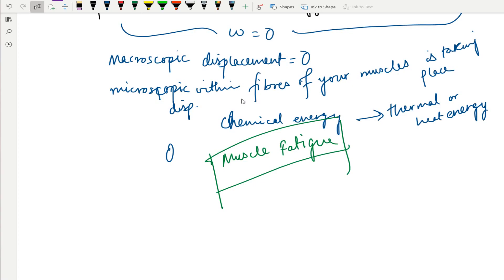Remember, whenever energy conversion takes place, there is work being done. So here, the energy conversion is happening within the body inside the muscle fibers. So it is microscopic, very minimal. And because of this microscopic work is being done, but macroscopic work is not being done.